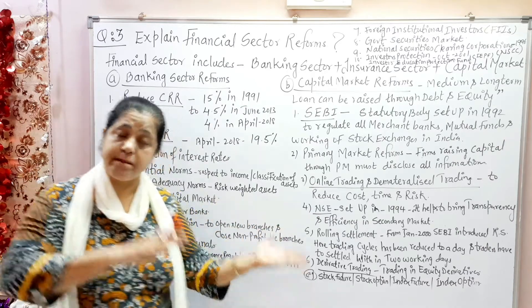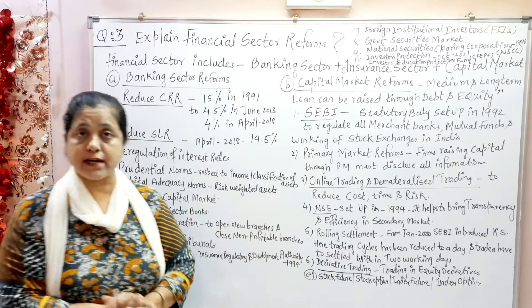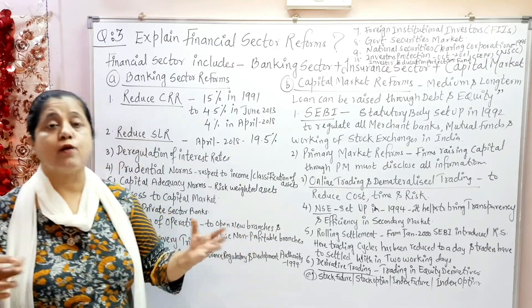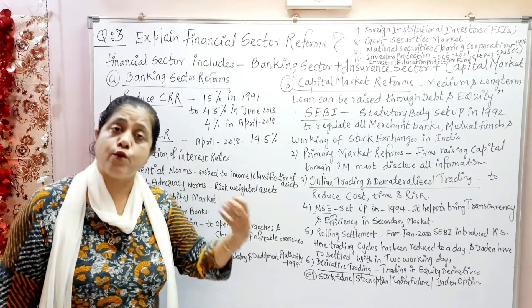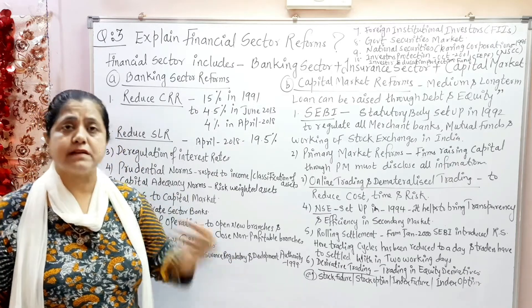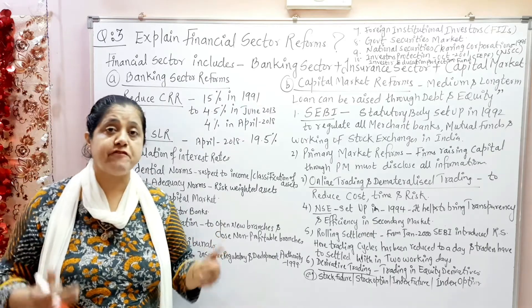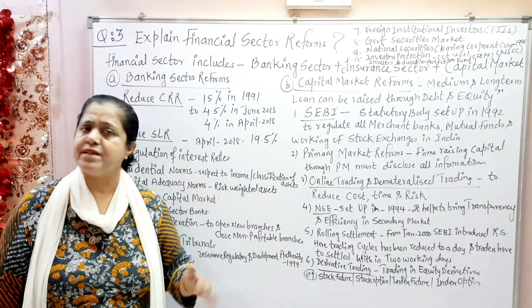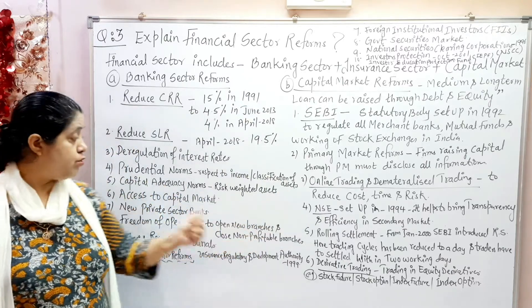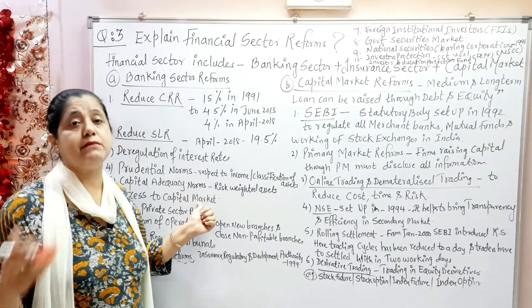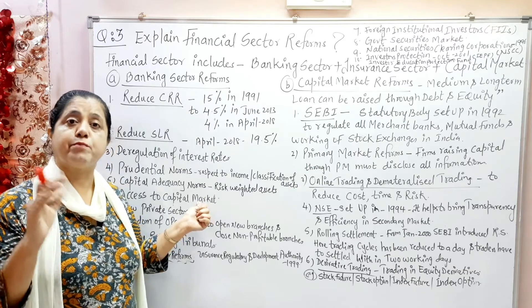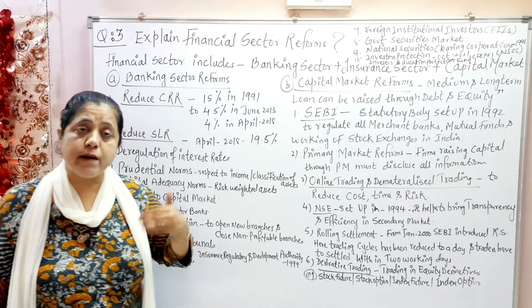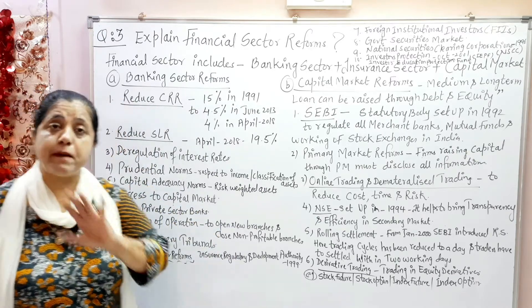The sixth step was access to the capital market. Banks were connected to the capital market and allowed to invest in both the primary and secondary markets. Incentives and facilities were provided to the banking sector so that if they want to raise capital — whether for new branches or expansion — they can do so through the primary or secondary market.